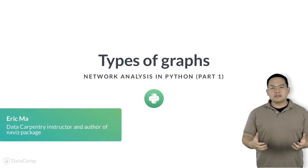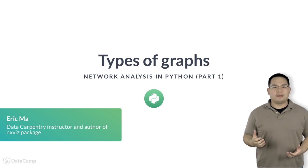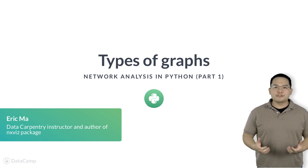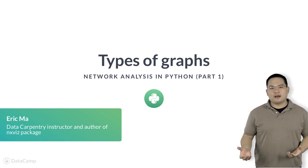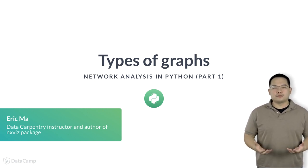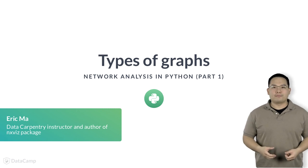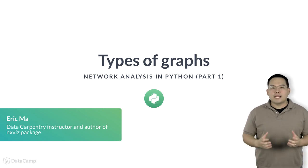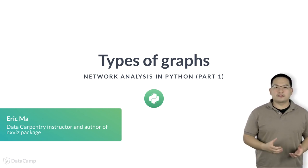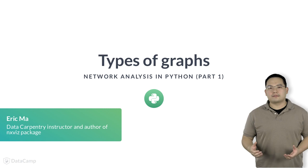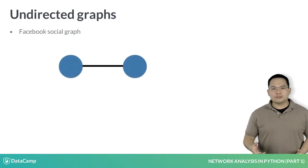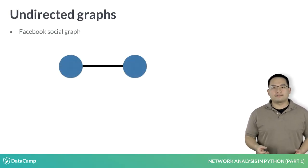We're now going to go a little bit deeper into the NetworkX API and introduce a few more concepts that you can use in network analysis. NetworkX allows us to model different types of graphs. For example, there are social graphs like Facebook, which are undirected graphs.